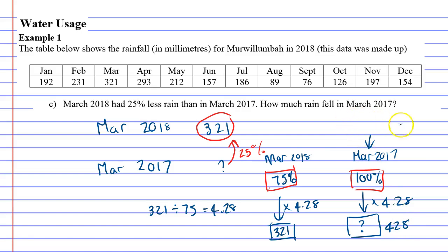So how much rain fell in March 2017? 428 millimeters.